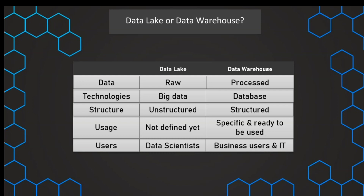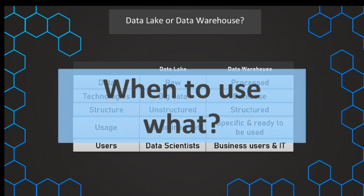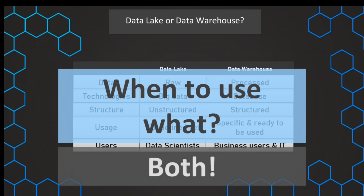We build the data warehouse for business users to make it easy to use — high user-friendliness. We process and structure the data and make it available in a database so that business users or IT professionals can easily get the data and slice and dice it in reporting or visualization tools. These are the main differences between a data lake and a data warehouse. You can now perhaps answer the question: when should we use what, and are they mutually exclusive — should we use one or the other, or is it better to use both? The answer is no, they are not mutually exclusive.